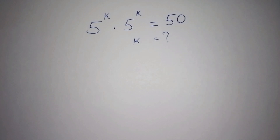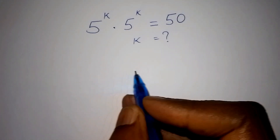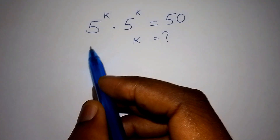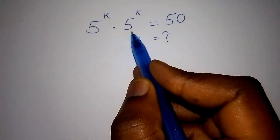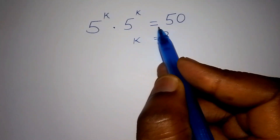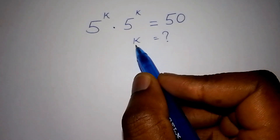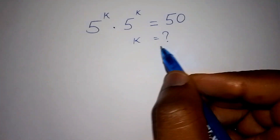Hello viewers, welcome to our maths lesson. Today I want us to solve this maths problem. We have 5 to the power of k, multiplied by 5 to the power of k, equals 50. So what is the value of k?